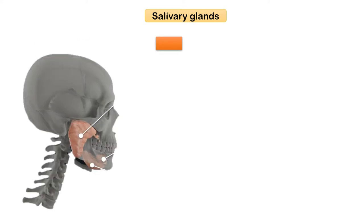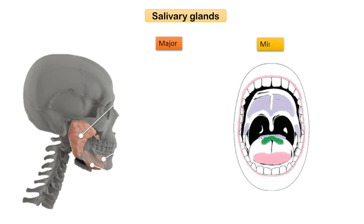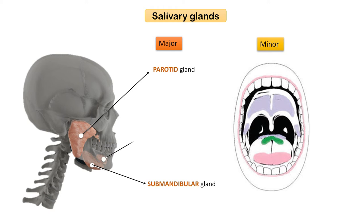Salivary glands are broadly divided into major and minor salivary glands. The major salivary glands produce about 0.5 to 0.75 liters of saliva on a daily basis. There are three main types of major salivary glands, present in pairs: the parotid, the submandibular (formerly known as submaxillary), and the sublingual glands.